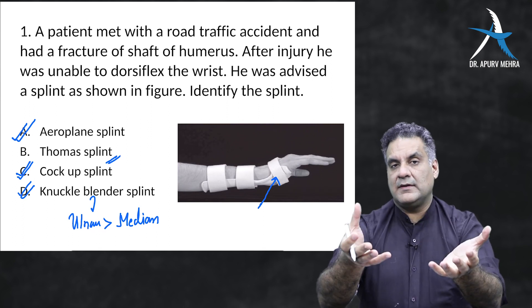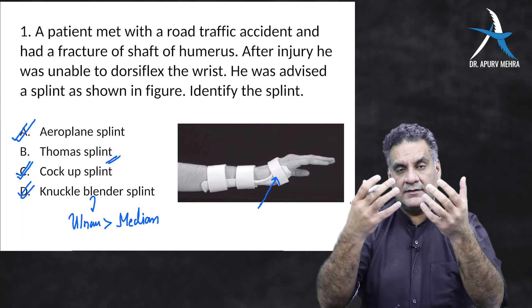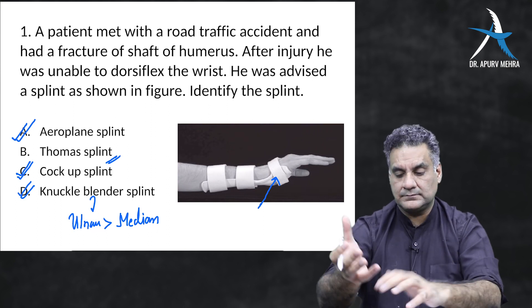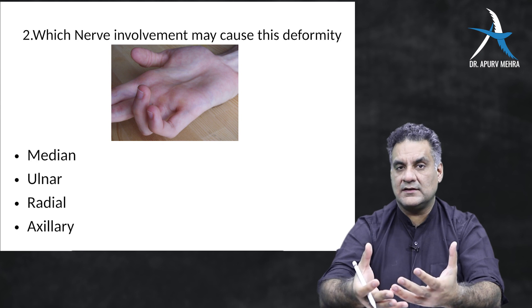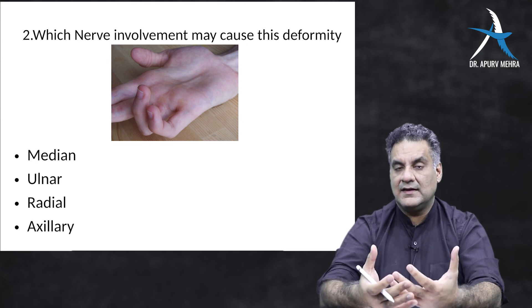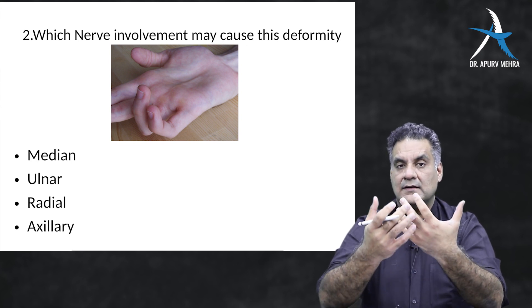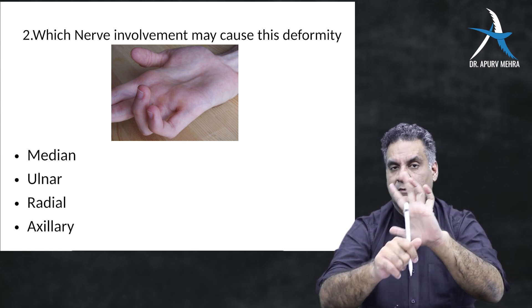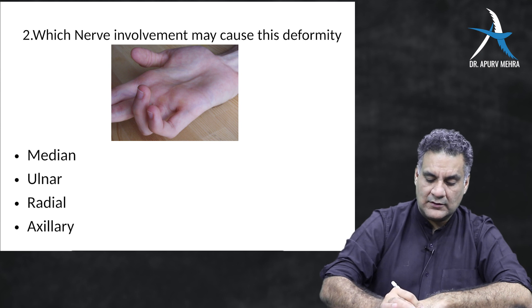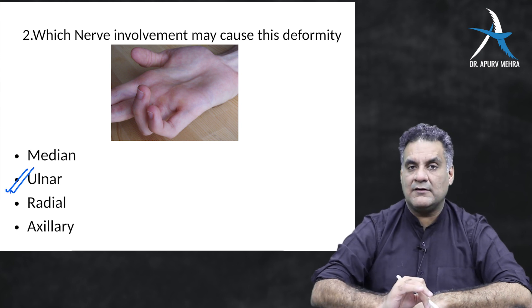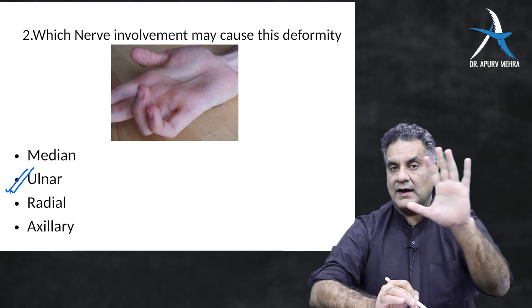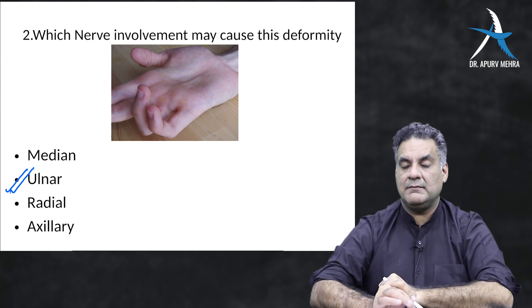The most common nerve damaged is the radial nerve, and the splint for it is the cock-up splint. Question two shows clawing of the last two digits — the third and fourth lumbricals are gone. Which nerve? Ulnar nerve. Which splint? Knuckle bender splint.